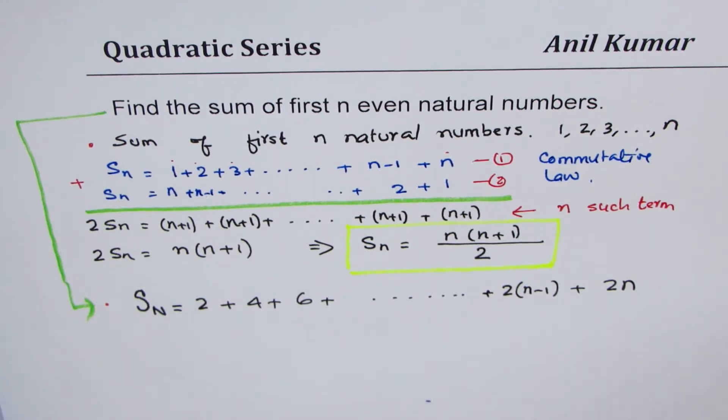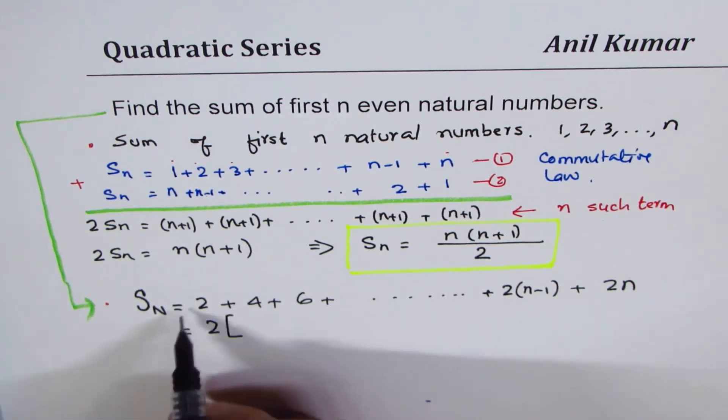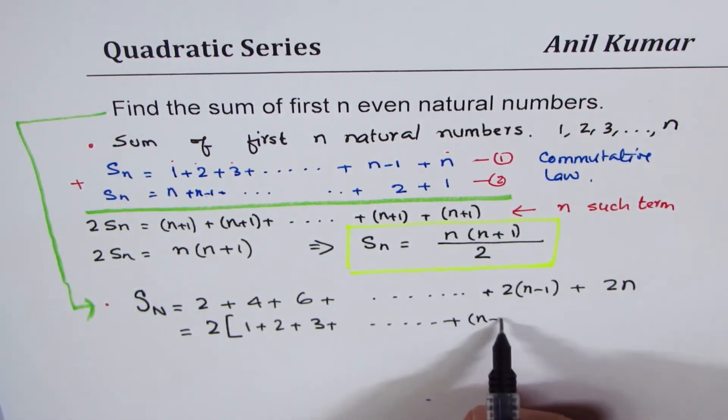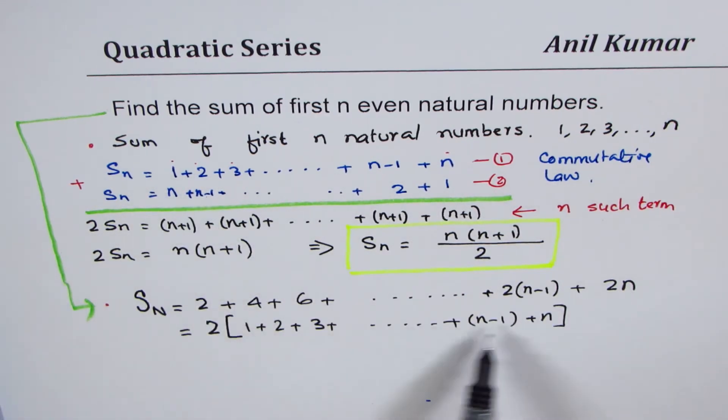Sum of, these are even numbers. So, S capital N. I could have written Se better. Let me just now say S capital N. How many such numbers are there? There are n numbers. So, what I can do here is, I can take two common. Let's factor out two. So, I get one plus two plus three plus so on, n minus one plus n. So, what I really get is sum of natural numbers. Do you see that? So, now, I can apply my formula.